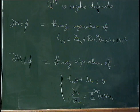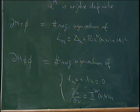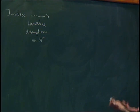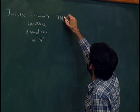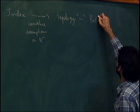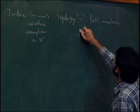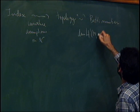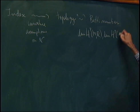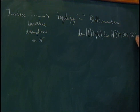The aim of the talk is to discuss how the index, under curvature assumptions on the ambient manifold, determines or bounds the topology of the minimal surface itself. By topology, I will mean in this talk the Betti numbers — in other words, the dimension of the homology groups — and also the relative homology in the case of free boundary minimal surfaces.